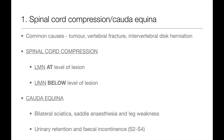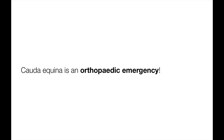In the case of cauda equina compression, in addition to back pain, there may be bilateral sciatica, saddle anaesthesia, and weakness of the legs. Patients experience urinary retention and faecal incontinence if the S2–S4 nerve roots are involved, because these nerve roots normally cause contraction of the detrusor muscle, relaxation of the external bladder sphincter, and contraction of the anal sphincter via the parasympathetic nervous system.